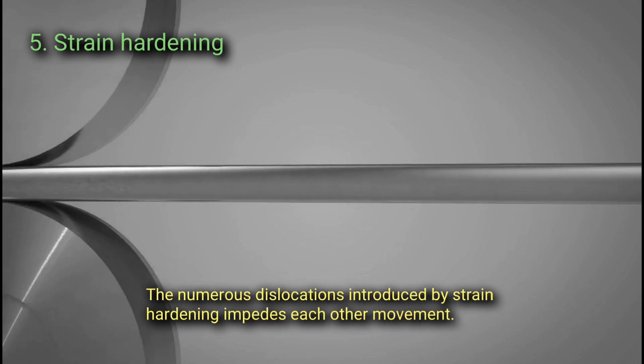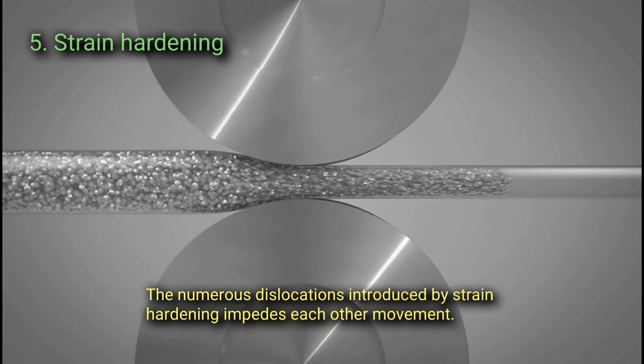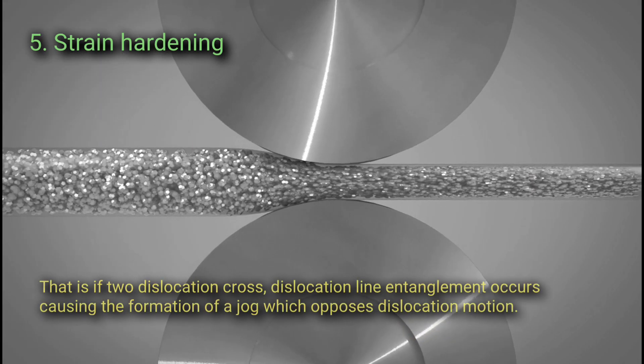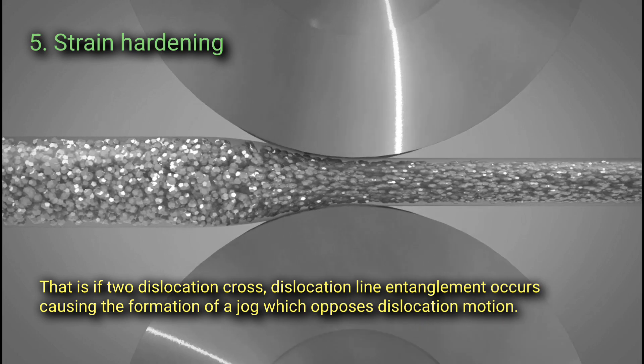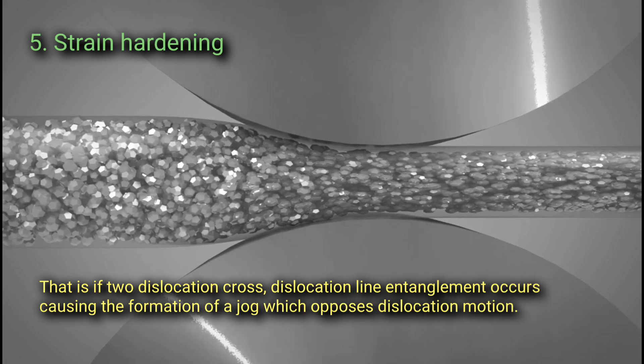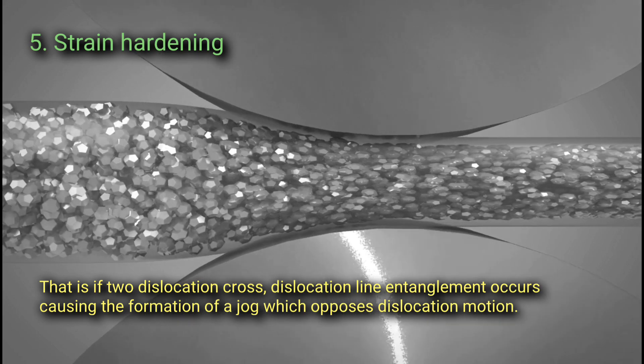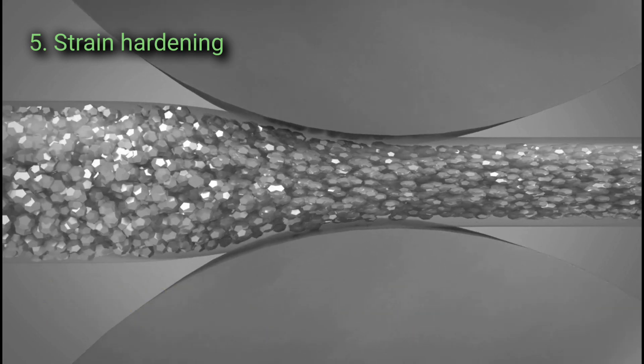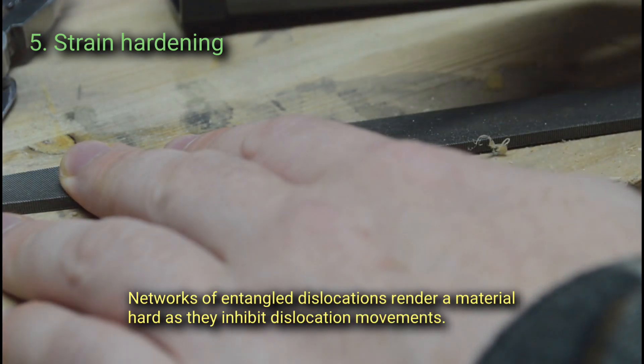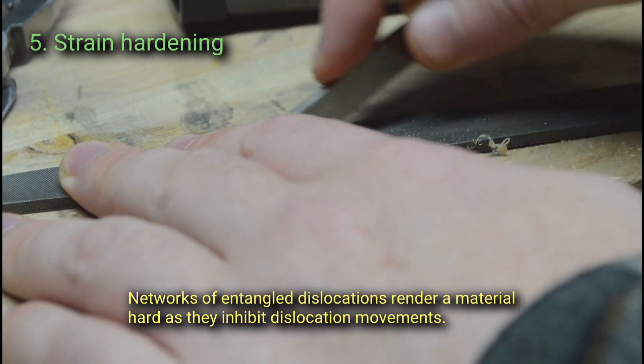The numerous dislocations introduced by strain hardening impede each other's movements. That is, if two dislocations cross, dislocation line entanglements occur, causing the formation of a jog which opposes dislocation motion. Networks of entangled dislocations render a material hard as they inhibit dislocation movements.